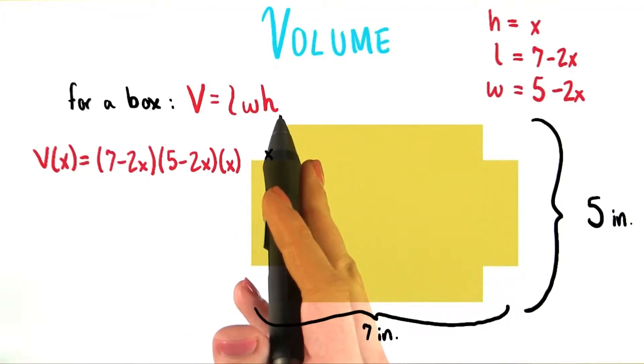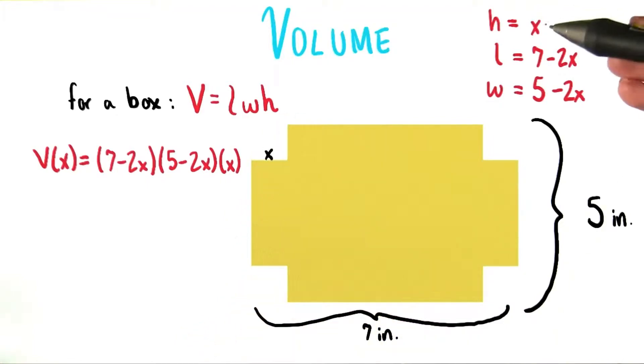All we need to do here is, starting with this equation for the general volume of a box, substitute in each of these expressions for the height, length, and width.